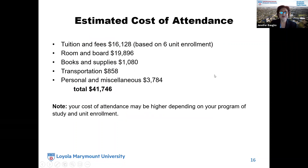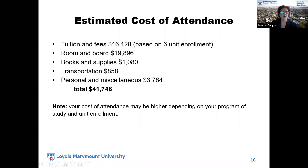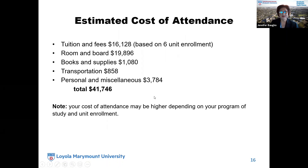The estimated cost of attendance for LMU — this is a general basic cost of attendance, and your cost may be higher depending on your program of study and unit enrollment. For a student enrolled in six units: tuition and fees are $16,128; room and board is estimated at $19,896; books and supplies are $1,080; transportation is estimated at $858; personal and miscellaneous expenses are $3,784 — for a total cost of attendance of $41,746. The cost of attendance really depends on your program of study and your unit enrollment.